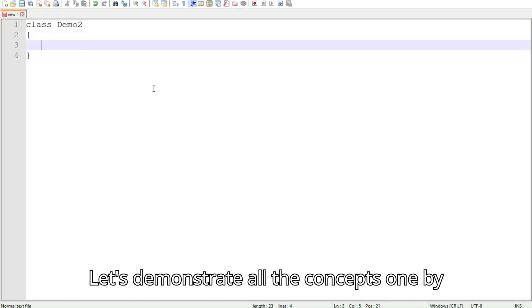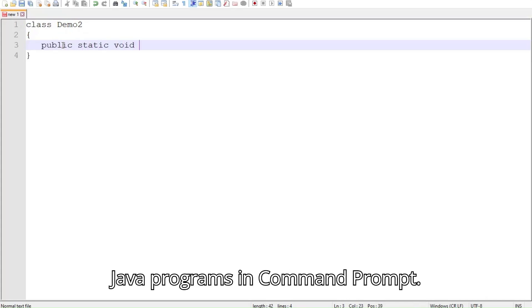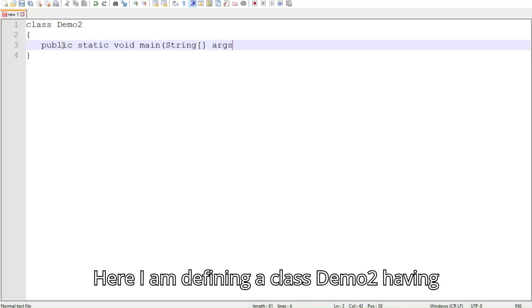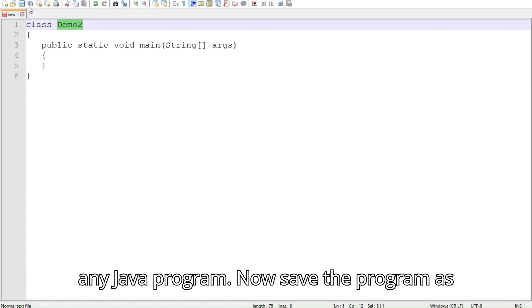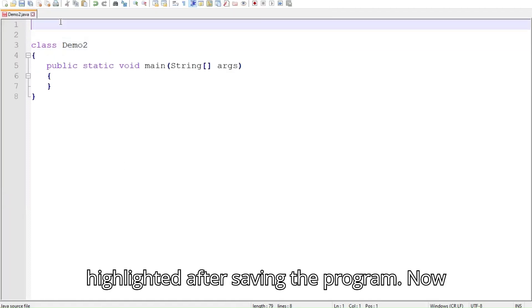Let's demonstrate all the concepts one by one practically. Here I am using Notepad++ as an IDE and run all Java programs in command prompt. Here I am defining a class Demo2 having main method which is the starting point of any Java program. Now save the program as Demo2.java. Keywords will be highlighted after saving the program.